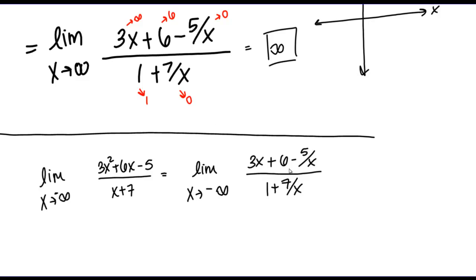Let's think about what happens to 3x as x goes to negative infinity. X going to negative infinity means x is getting arbitrarily large in the negative direction, so 3x does the same thing — it gets arbitrarily large in the negative direction. So as x goes to negative infinity, 3x also goes to negative infinity. As x goes to negative infinity, 6 is just going to stay 6, since there's no x in that term.